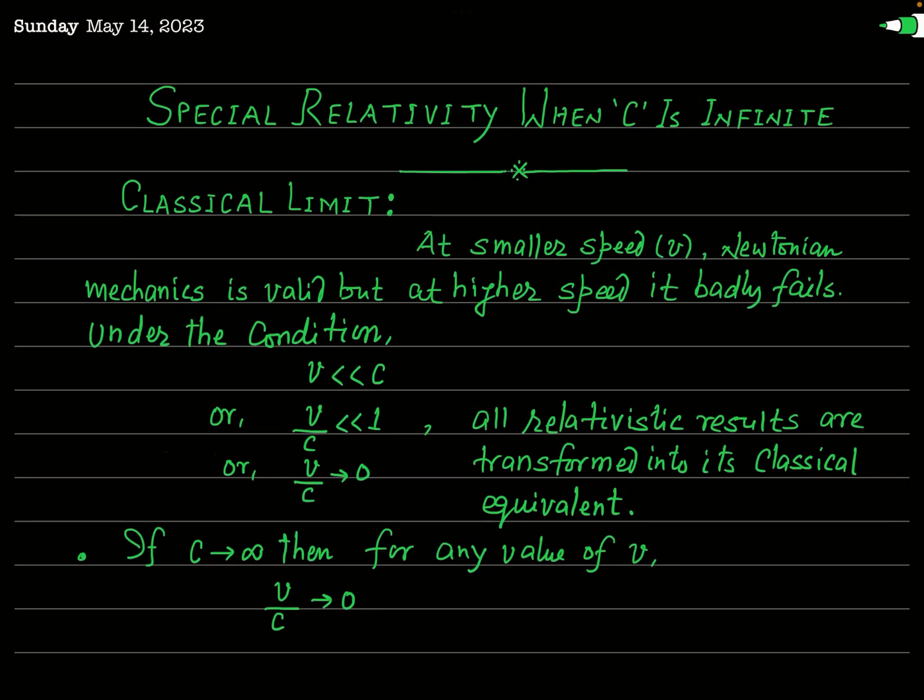In this lecture we are going to see what will be the fate of special relativity proposed by Albert Einstein when the speed of light c is infinite. As you know, if the speed of light in free space is considered to be infinite, it would imply that there is no upper limit on the speed at which information or any physical object can travel. In such a scenario, the principles of special relativity, which involve the constant speed of light, would no longer apply.